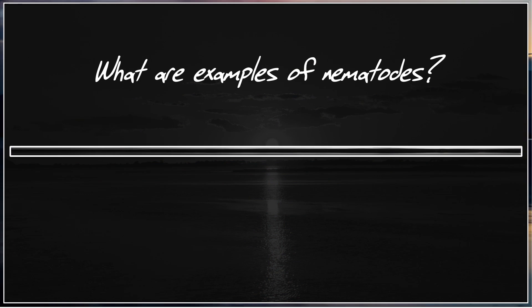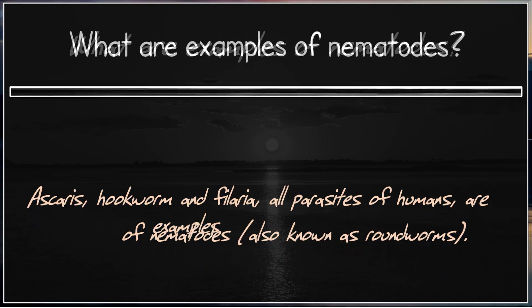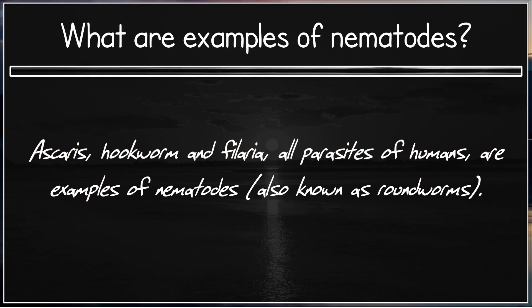What are examples of Nematodes? Ascaris, hookworm, and filaria — all parasites of humans — are examples of Nematodes, also known as roundworms.